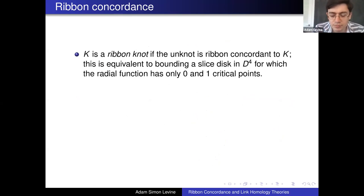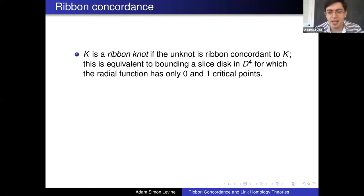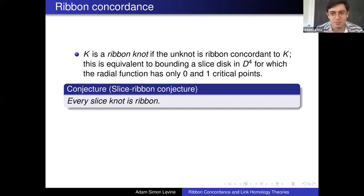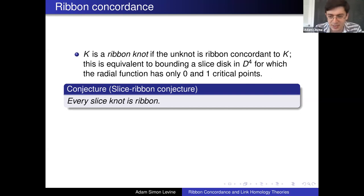We say that K is a ribbon knot if the unknot is ribbon concordant to K — that is, if you can start with the unknot and end up with K. This is equivalent to bounding a slice disc in the four-ball which only has index zero and index one critical points. Now, the famous slice-ribbon conjecture: every ribbon knot is slice, and every slice knot — every knot bounding any slice disc — can actually be shown to bound a ribbon disc. This conjecture has been around for a long time and no one really knows how to approach it.